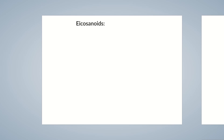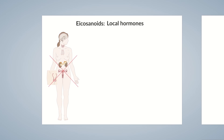Eicosanoids are a group of hormones belonging to the local hormones, which are sometimes called tissue hormones. In contrast to classical hormones, local hormones aren't synthesized in endocrine glands and transported to the target site, but are produced directly within the tissue.